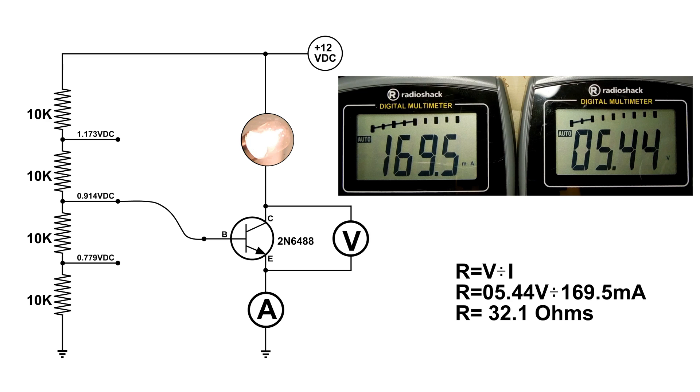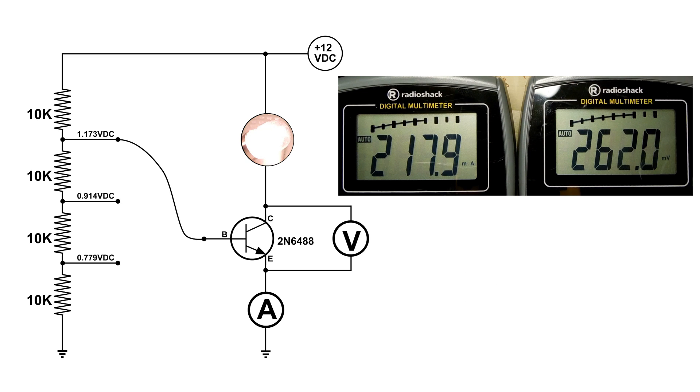Now I'm going to connect the lead to the highest bias and we now have the highest current and the bulb is very bright now. We've got 217.9 milliamps and 262 millivolts, very low volts across the E and C. So looking at Ohm's law R is now 1.2 ohms. That's the resistance between E and C.